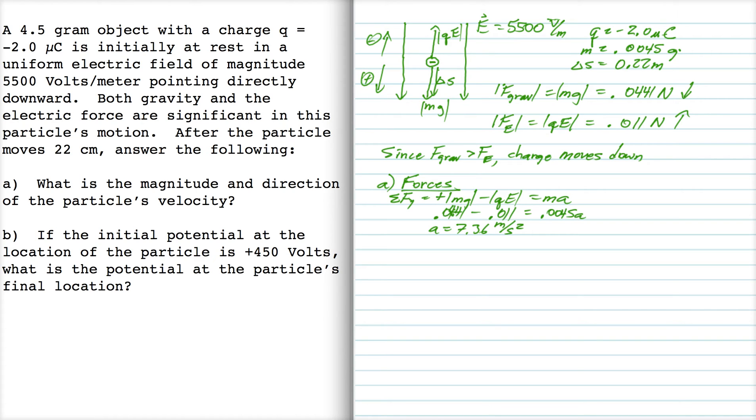And now I can use v squared is equal to v naught squared plus 2A delta s. And I can use this because I know v naught starts at rest, I know the acceleration, and I know the distance traveled delta s, which is 0.22 meters. And if you solve for v, the final velocity, you get 1.8 meters per second, of course, directed downward.